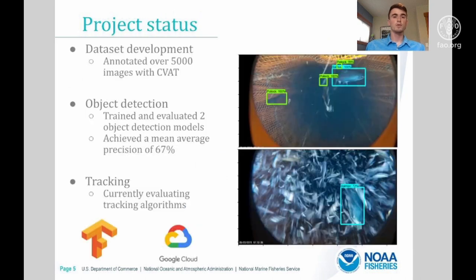Right now for our project, we have three main areas of focus: dataset development, object detection, and object tracking. Using Intel's open source annotation tool CVAT, we've been able to annotate over 5,000 images and 30,000 individual fish. We've been using that data along with TensorFlow and Google Cloud to train and evaluate several object detection models.